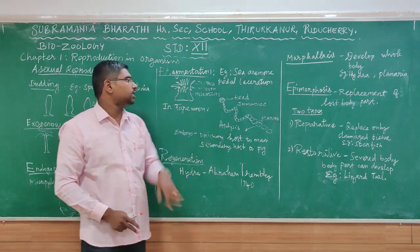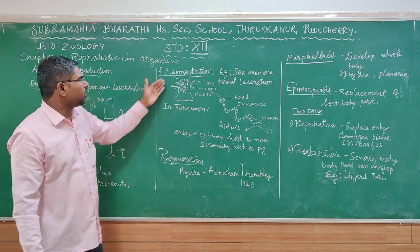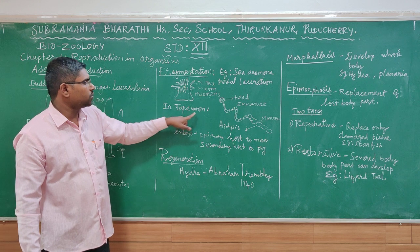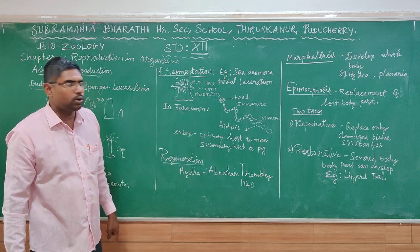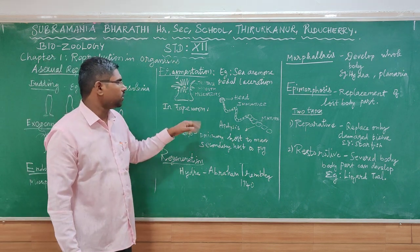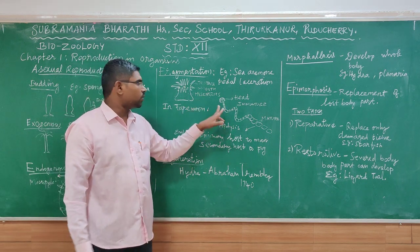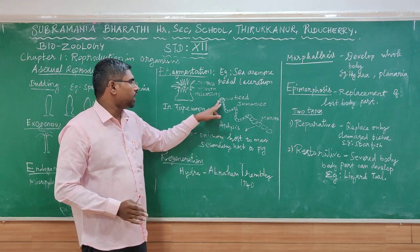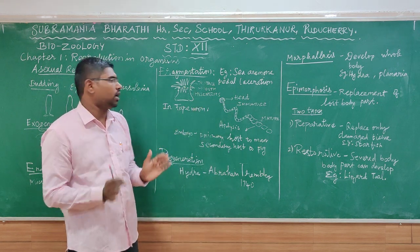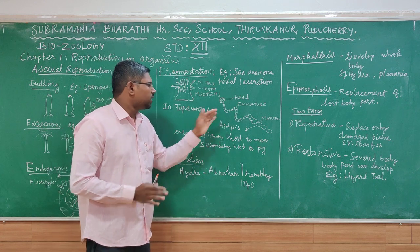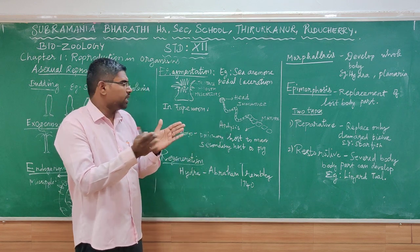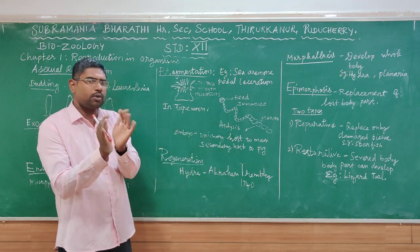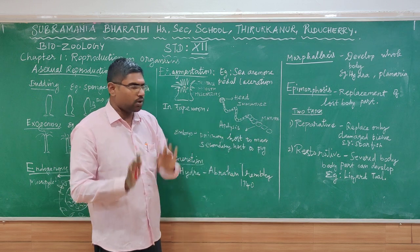Another form is fragmentation seen in tapeworms. The tapeworm has a segmented body, a head (scolex), neck, and a series of segments called proglottids. The mature proglottids form at the posterior end of the tapeworm body.